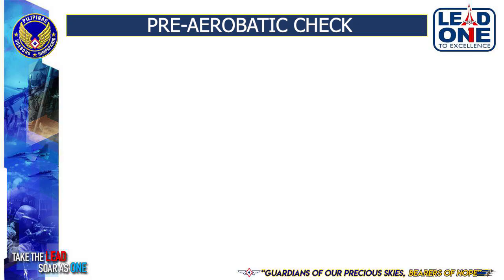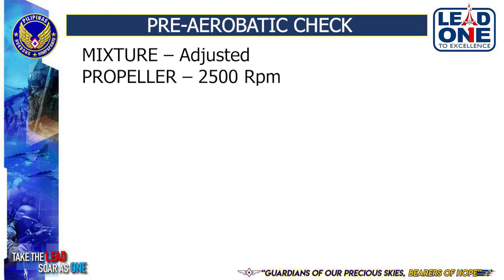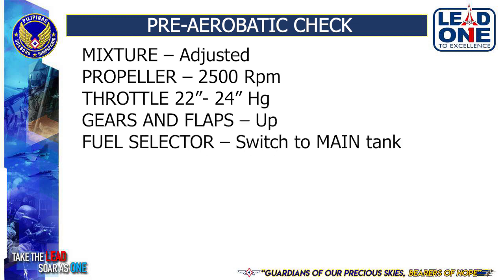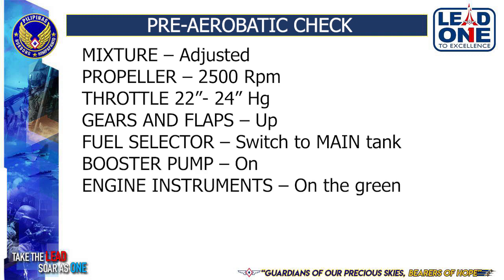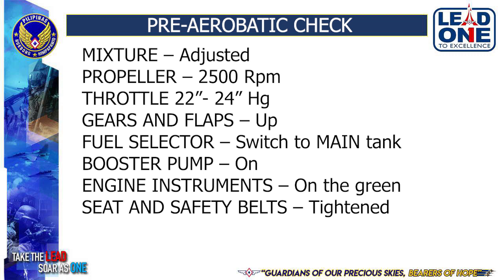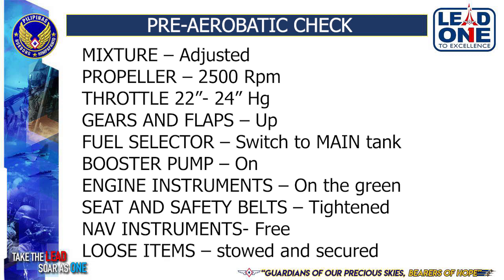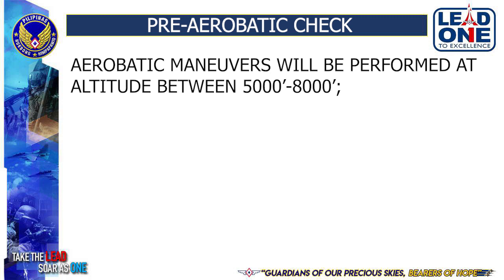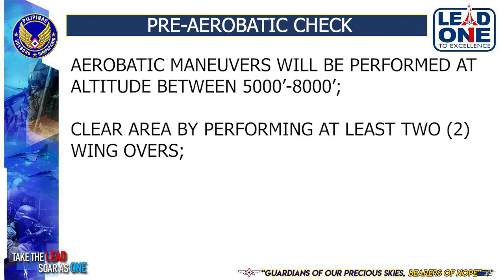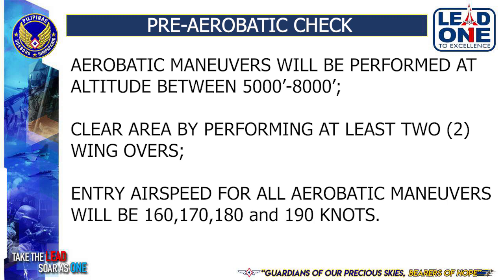Pre-aerobatic check must be performed before executing aerobatics. Mixture adjusted. Propeller 2500 RPM. Throttle 22-24. Gears and flaps up. Fuel selector switch to main tank. Booster pump on. Engine instruments on the green. Seat and safety belts tightened. Nav instruments set to free. Loose items stowed and secured. Aerobatic maneuvers will be performed at altitude between 5 to 8 thousand feet. Clear the area by performing at least two wing overs. Entry airspeed for all maneuvers will be 160, 170, 180, and 190 knots.